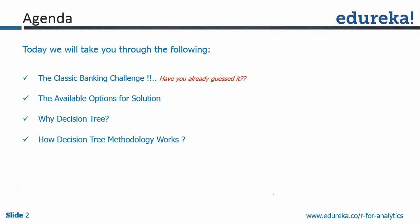Giving a credit card or lending a loan can be a tricky situation. What if the person you give the loan or credit card to defaults? The bank is going to incur huge losses. That's the typical challenge. We are going to evaluate decision tree against a few other techniques which can most probably be used in this kind of situation.